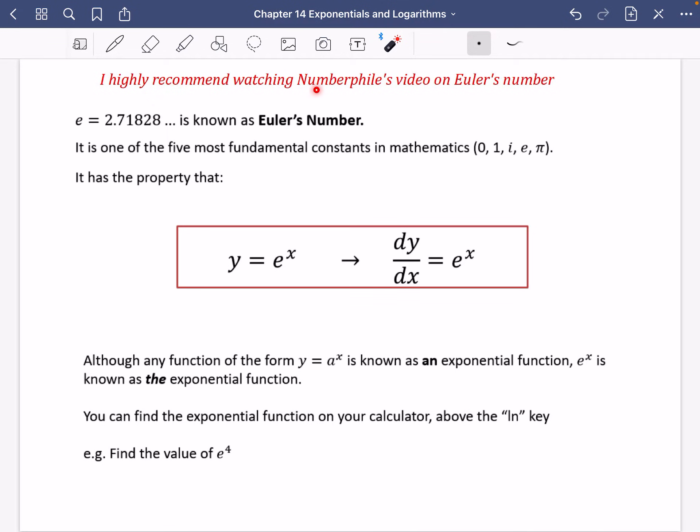Before I move on here, I highly recommend watching Numberphile's video on Euler's number. Just go on YouTube, search Numberphile and Euler's number. It will tell you about where this number comes from. It's not just some random number that I'm talking to you about now. It is incredible, and it pops up everywhere. In fact, it is one of the five most fundamental constants in mathematics. And we list these as 0, 1, i, which is an imaginary number, e, and pi. So it's worth watching this video. I'd highly recommend taking the time out of your studies to watch this, because it's a fascinating number that pops up in so many areas of maths.